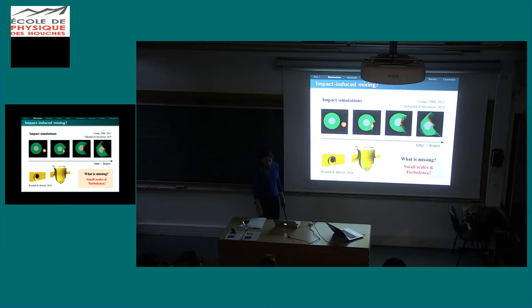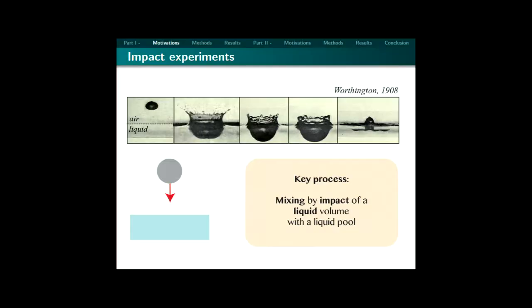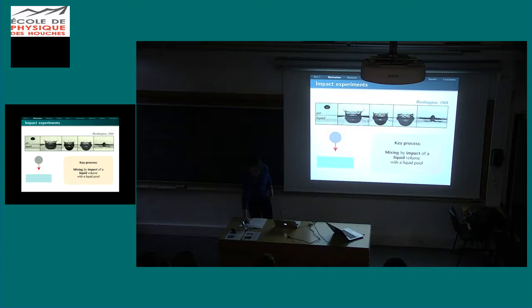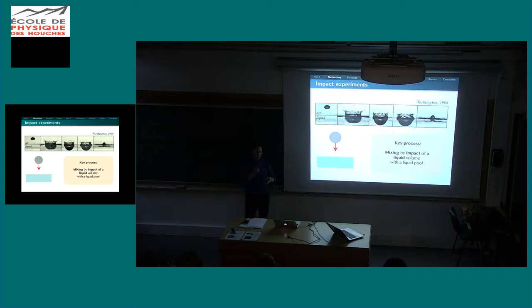Numerical simulations cannot really answer this question because they only resolve a length scale of about 100 kilometers. So we need experiments. I'm going to argue that impacts of a drop with another liquid are good analogs for the impacts that form the Earth. When you have a drop and you release it in water, you have some kind of splash. Those impacts are good analogs for the large impacts that form the Earth, or at least that's the path we are taking.